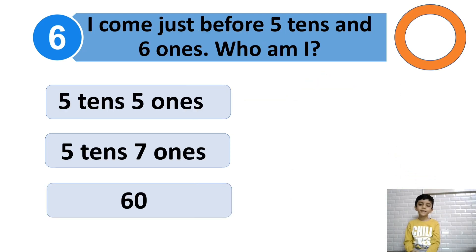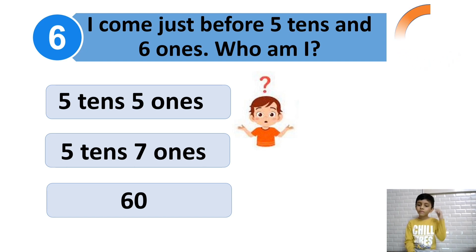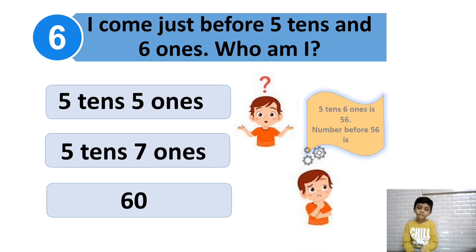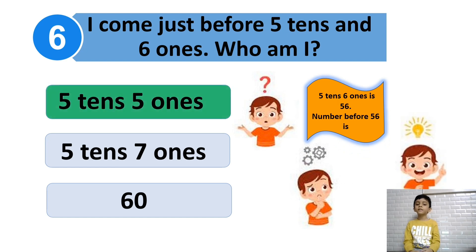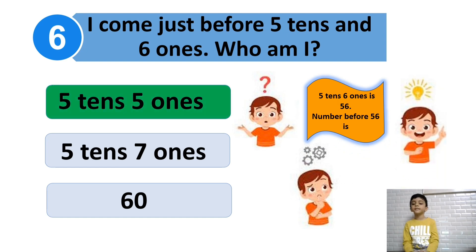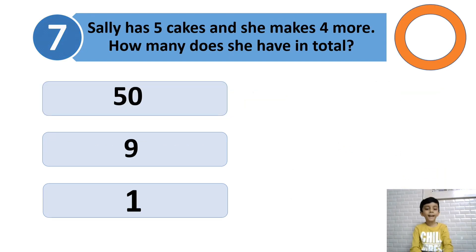I come just before 5 tens and 6 ones! Who am I? 5 tens and 6 ones is 56! Can you think now? Yes! The answer is 4 tens and 5 ones!